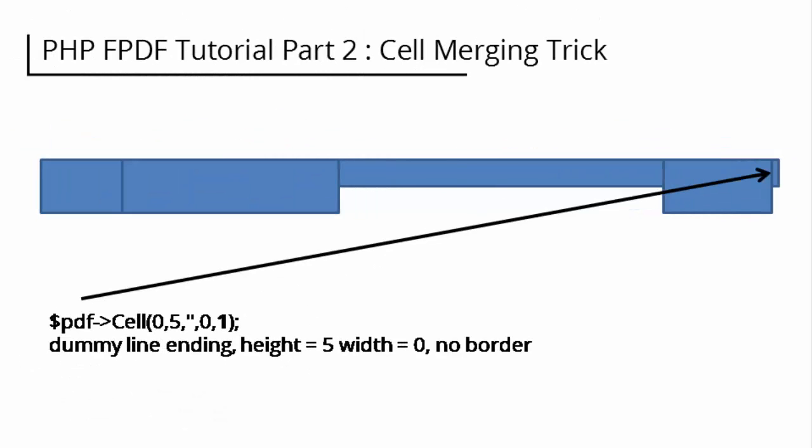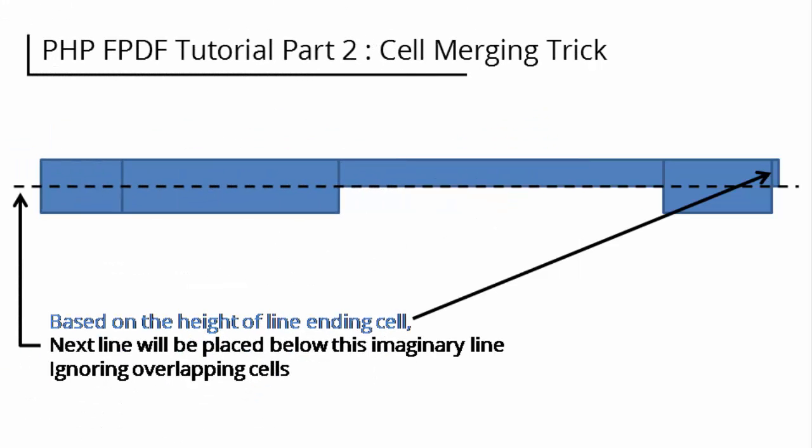Each line must end with a cell which has the default height. In this example, the height of the last cell in the line is 10, so we need to make a dummy invisible cell with the default height. To do that, we just make a cell with height of 5, width of 0, no border, and no content. Do not forget to make this cell a line-ending cell.